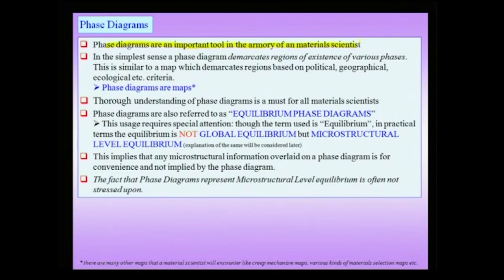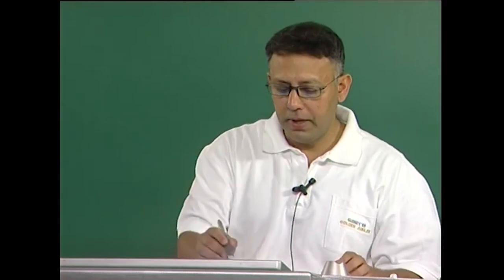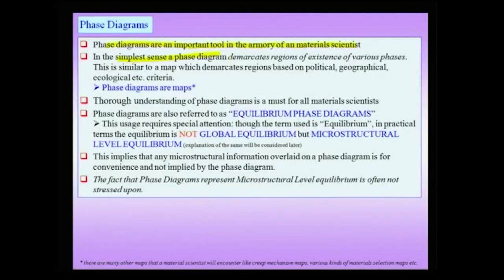There are extensive collections of binary and ternary phase diagrams in literature, and there are dedicated handbooks which deal with phase diagrams. The other important tool, which will be the topic of the next chapter, is the TTT diagrams or time-temperature transformation diagrams. If you want to understand a phase diagram in the simplest sense, we can think of it as a diagram which demarcates various regions of existence of various phases — something like a map which demarcates regions based on political, geographical, or other criteria.